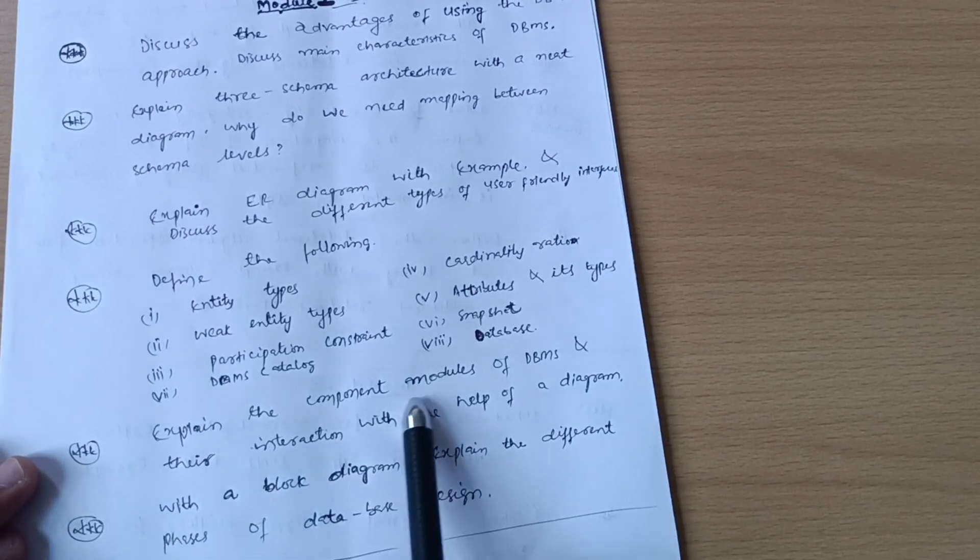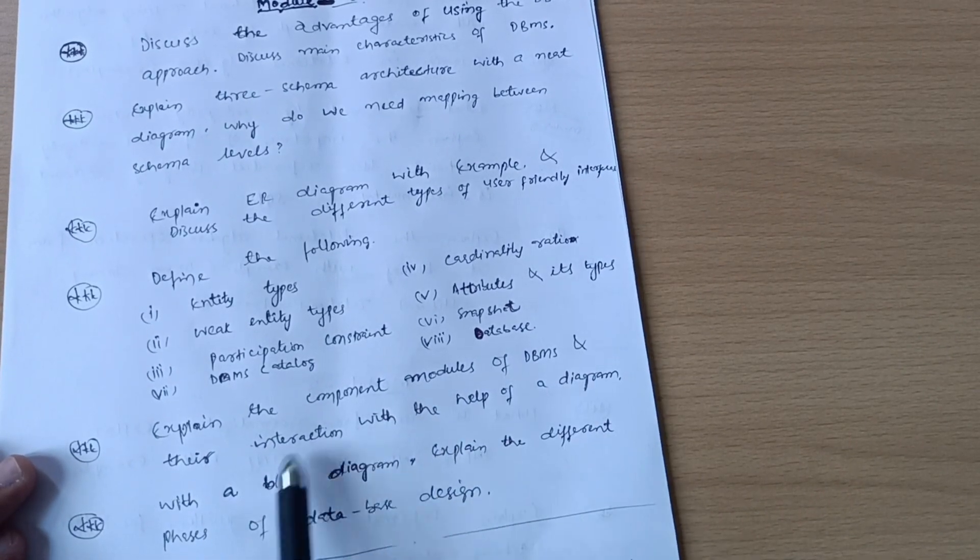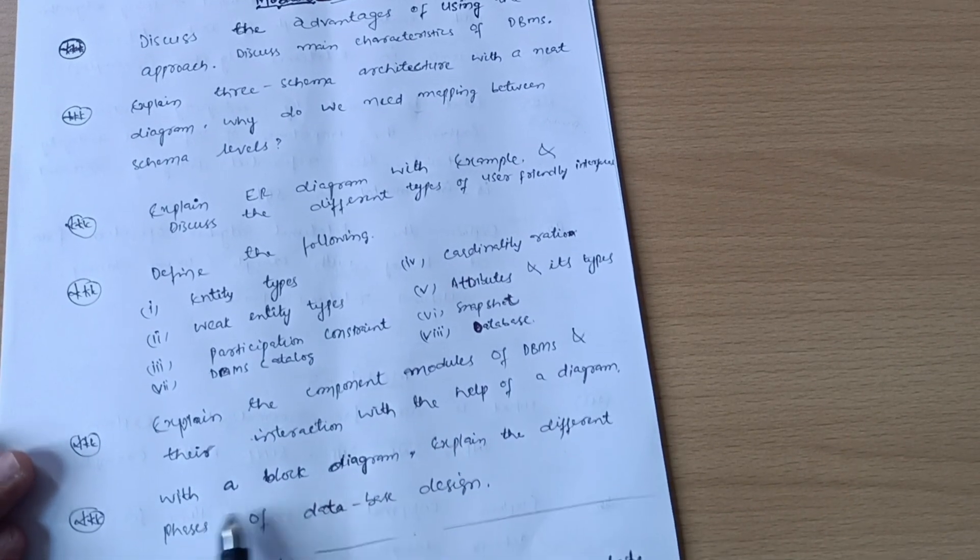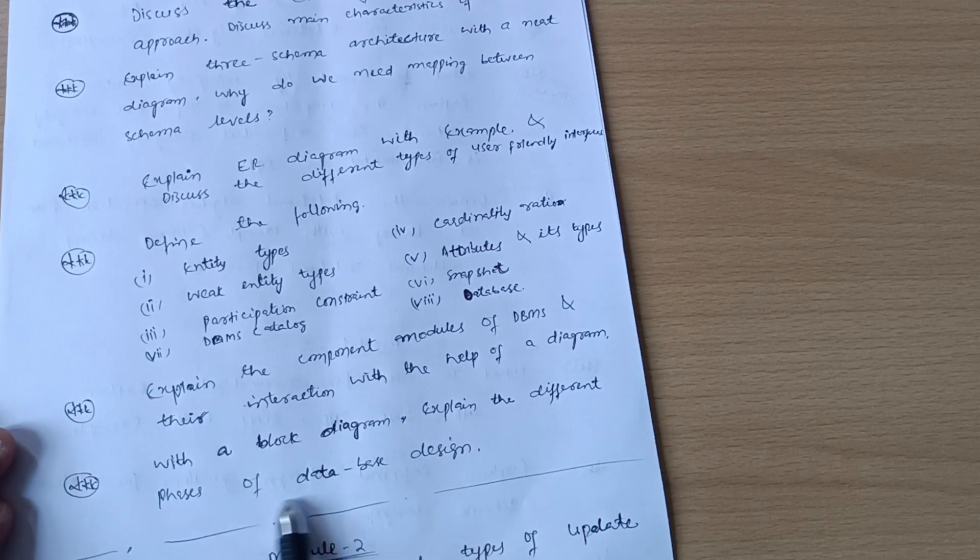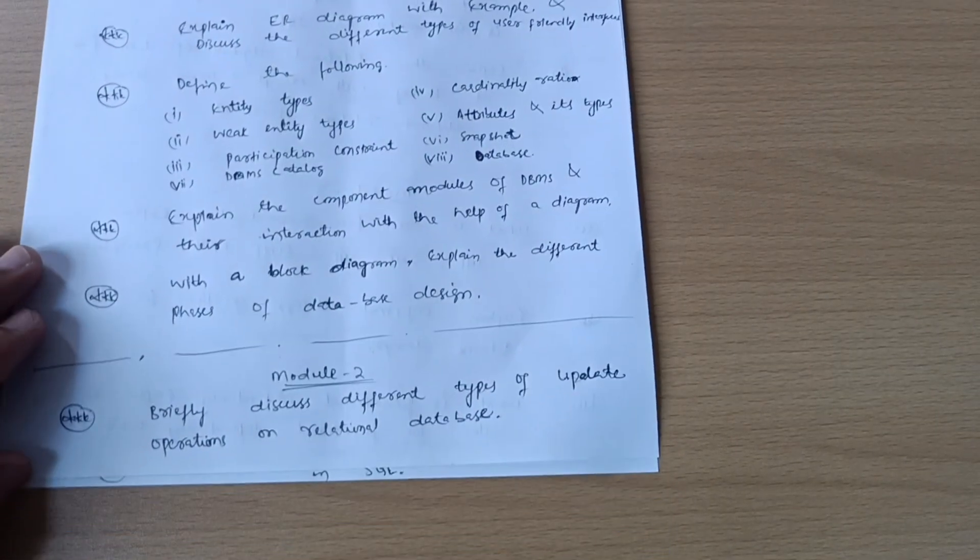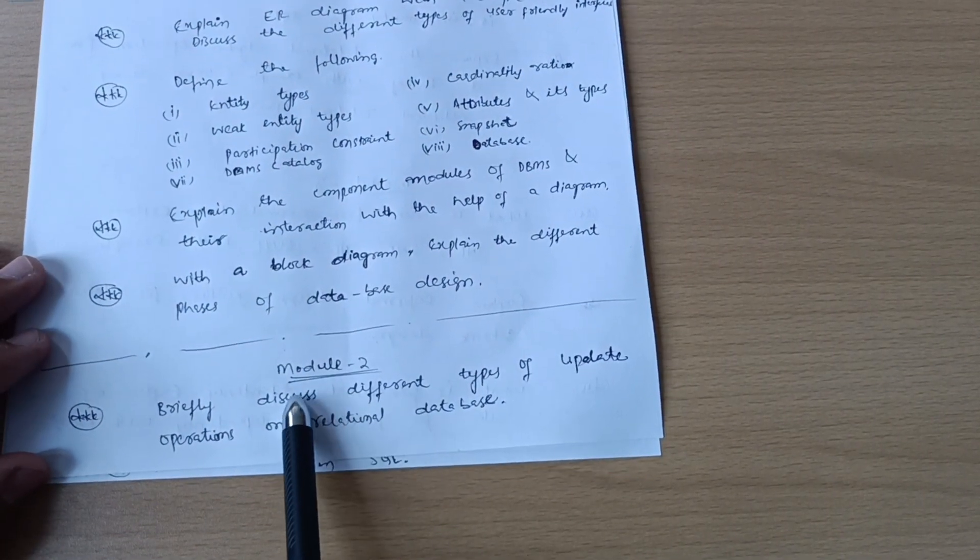Explain the component modules of DBMS and their interaction with help of a block diagram. Explain the different phases of database design. This is all about Model 1.